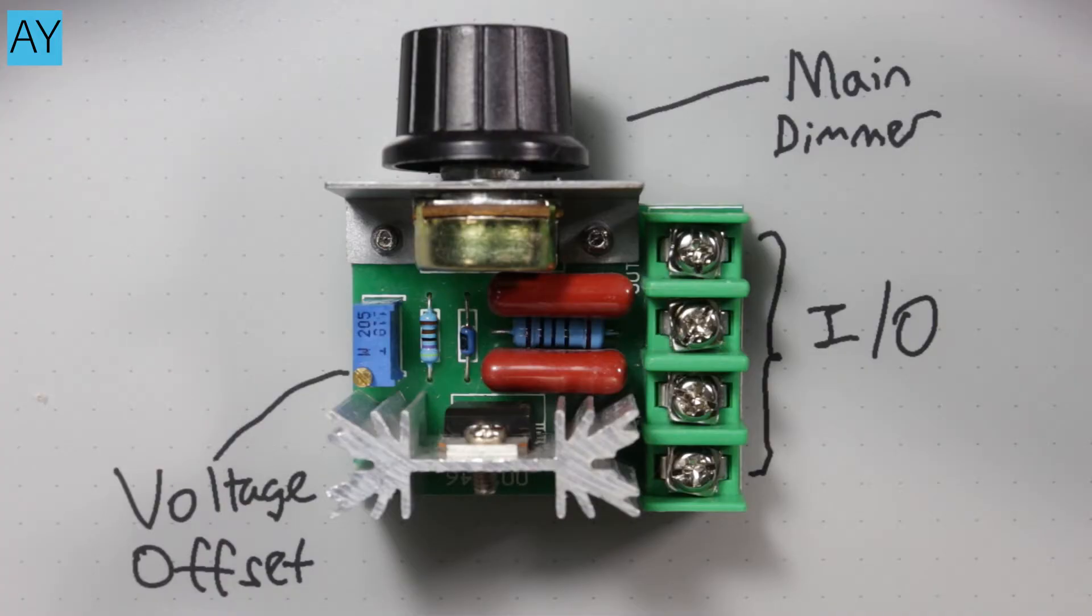This is the heart of our build today, an AC voltage regulator module or triac module. This can be bought off eBay or Aliexpress for a couple of bucks each.